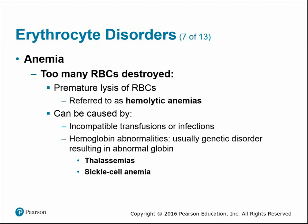Hemolytic anemia results from premature lysis of red blood cells — breaking them apart — faster than they can be produced. This can be caused by an incompatible transfusion, infection, or hemoglobin abnormalities. Since hemoglobin is a protein coded in DNA, these are typically caused by a genetic mutation that affects the hemoglobin protein structure.